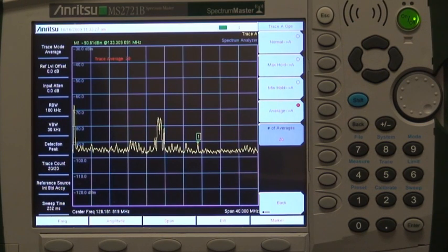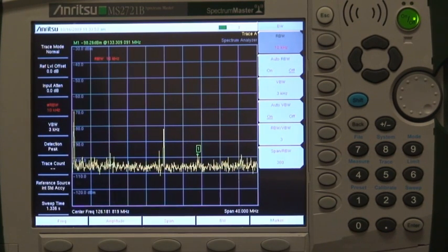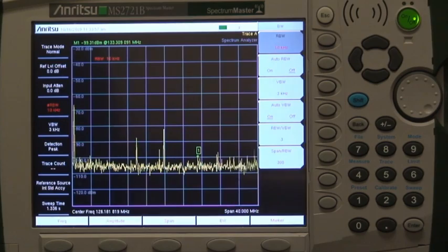You can get just about the same results by averaging 20 traces, but it takes longer to get the results, about 2.3 seconds. You can also select a narrower resolution bandwidth, in this case taking about 1.3 seconds for the sweep.